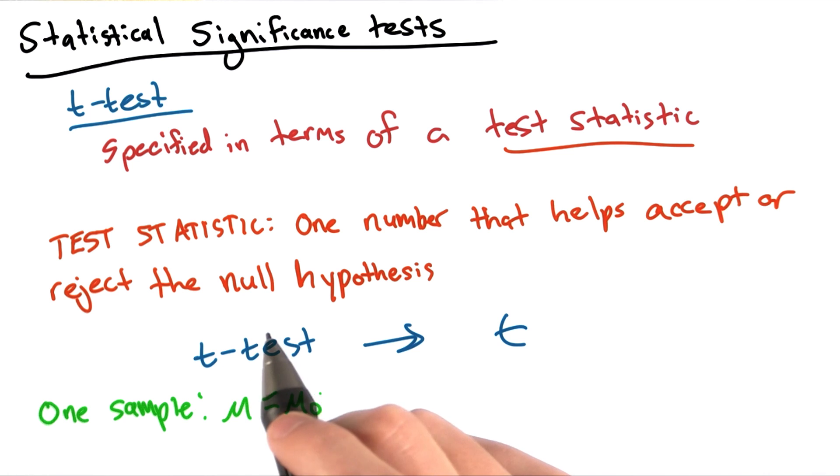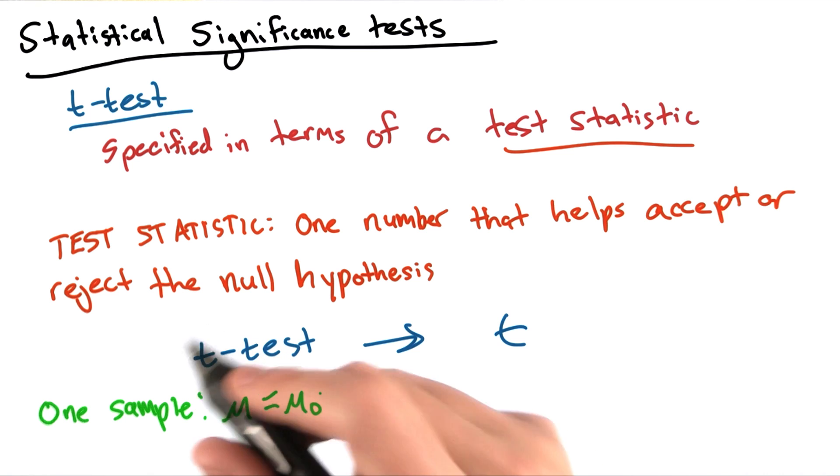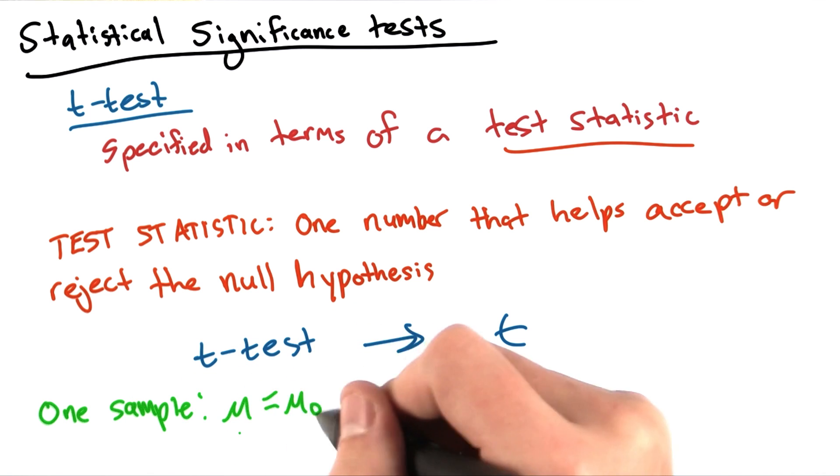In the case of a one sample t-test, our null hypothesis would be that the population mean, mu, is equal to our sample mean, mu naught.